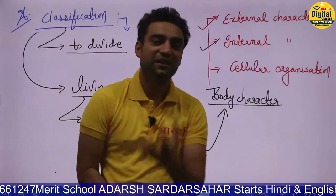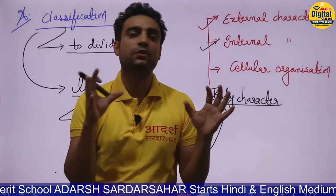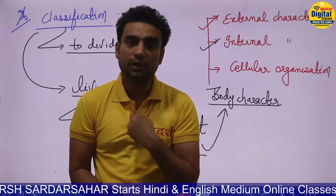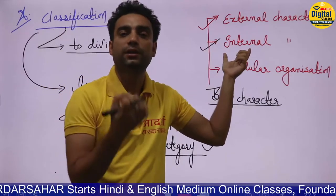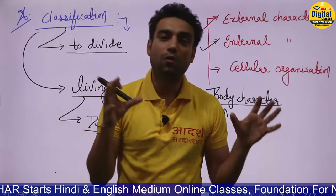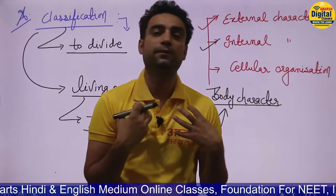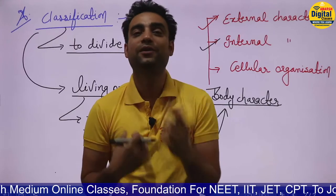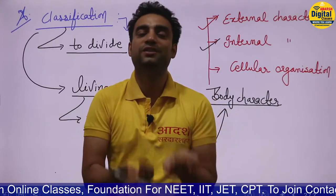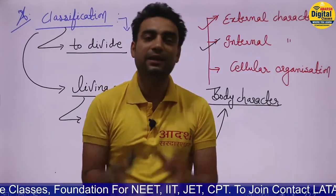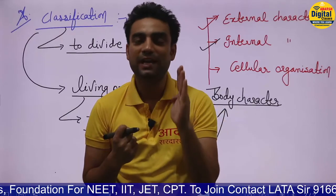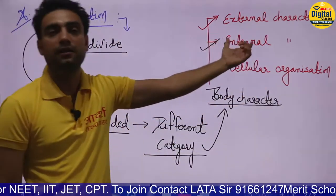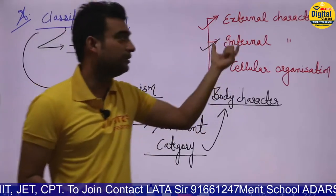The second type is internal character. Internal means inside — characters that are not visible from outside, that are situated inside the body. For example, all internal organs: lungs, kidney, heart, brain, liver, stomach. In plants, tissues inside the plant such as xylem tissue and phloem tissue. Characters inside are internal; characters visible from outside are external.